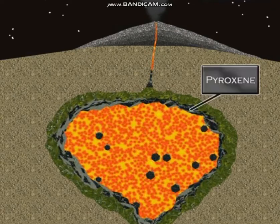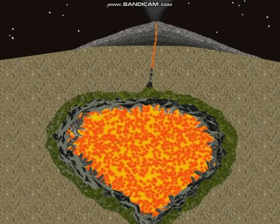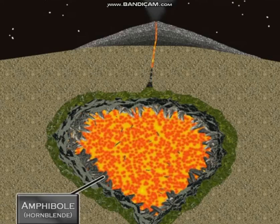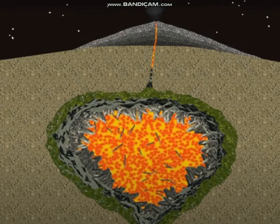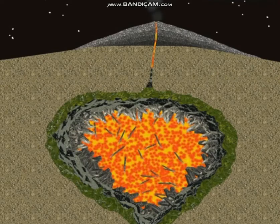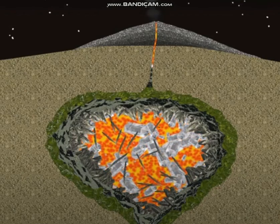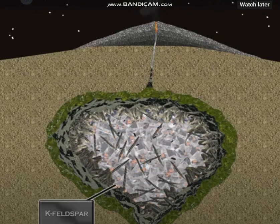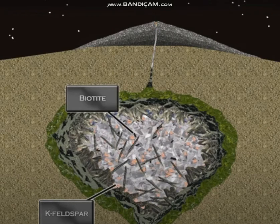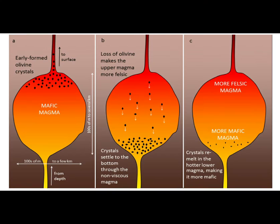Imagine a melt where we gradually decrease temperature. At a particular point, crystals of a particular mineral will crystallize. If we continue decreasing temperature, the melt reacts with already-formed crystals to form a new mineral. Because a new mineral has formed, the chemical composition of the minerals changes, and the composition of the melt also changes after the reaction. However, as a whole, the bulk composition of the total system remains the same because none of the elements leave the system. This is equilibrium crystallization.